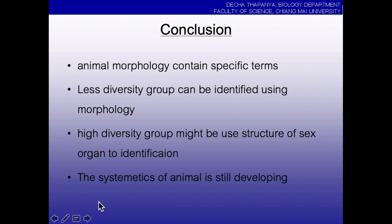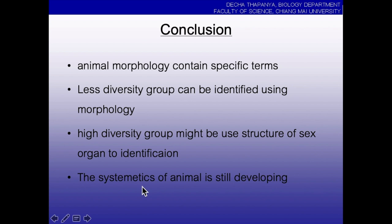The last point is that the systematics of animals is still developing every day and every week — scientists find new species and publish papers. The systematic understanding of animals never stops. If a group becomes too large, it must be split and names must change. Because systematics is still developing, morphological identification remains necessary to use.